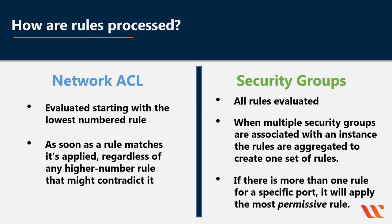For example, if you had a security group that allows access to port 22 from IP 1.2.3.4, and another security group that allows access to port 22 from everyone, in that case everyone would have access to port 22.